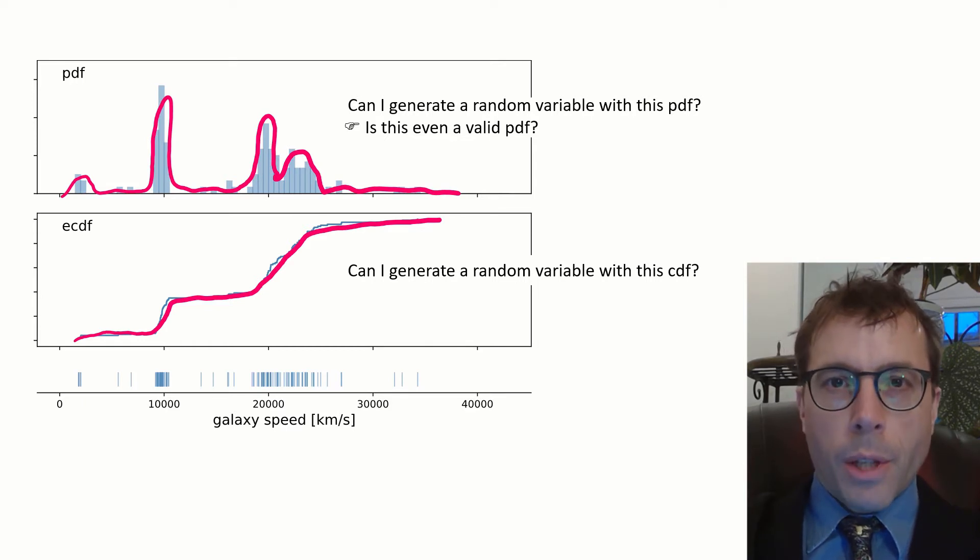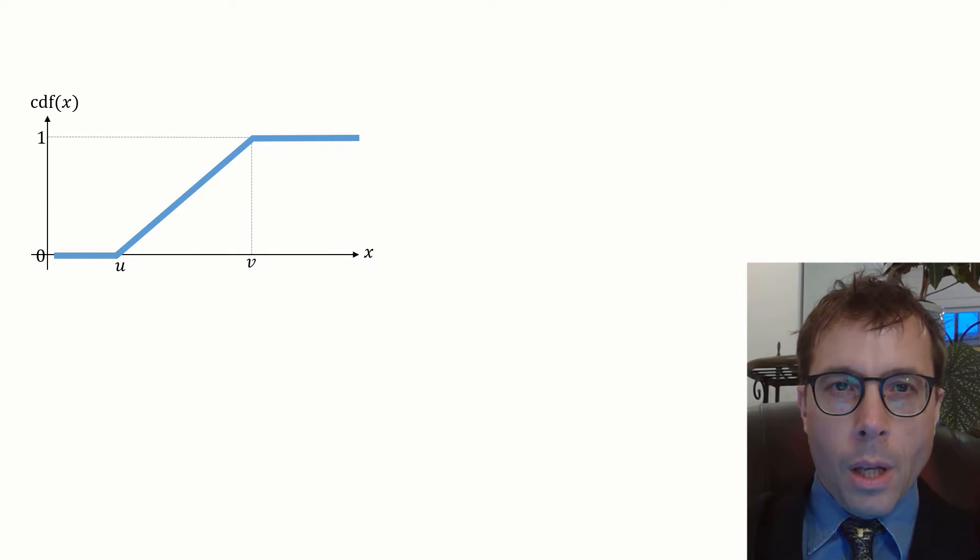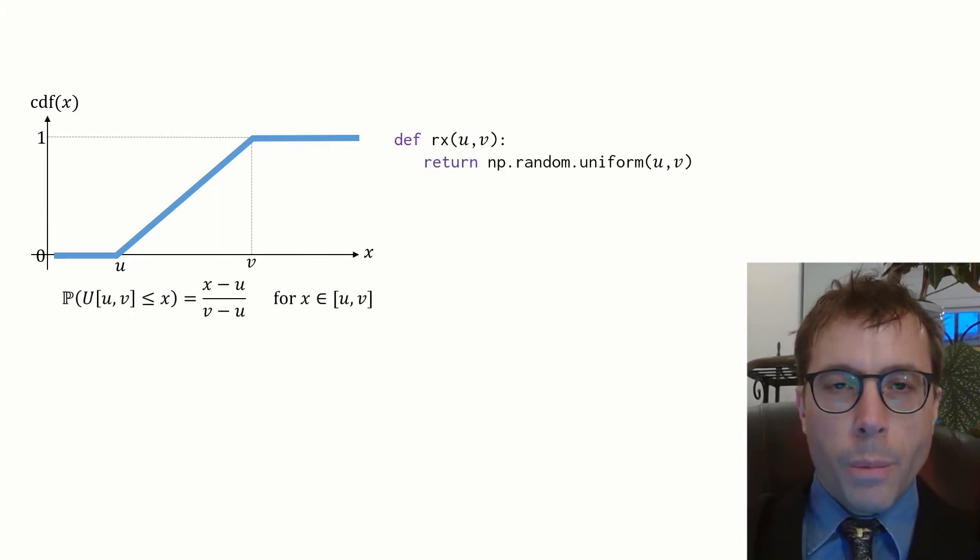Let's work through some examples to build up intuition for the link between custom CDFs and code. We'll start with the simplest possible CDF. If you see this CDF, you should immediately recognize it as a uniform distribution, uniform in the range u to v. The CDF has constant slope in this range from u to v, which means that when you differentiate it you get a constant, which means the PDF is constant, which means that all values in the range u to v are equally likely, which is a uniform random variable.